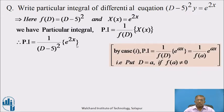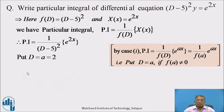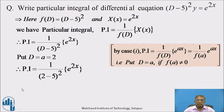The function is of exponential type e^(ax). Therefore, by Case 1, to find PI, put every D equal to a in the denominator. Here, a = 2 (coefficient of x). Therefore, put D = 2 in the denominator: PI = 1/(2 − 5)² · e^(2x) = 1/9 · e^(2x). This is the required particular integral of the differential equation.